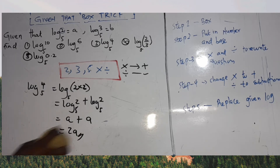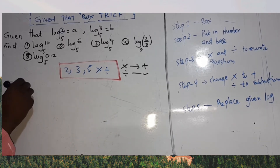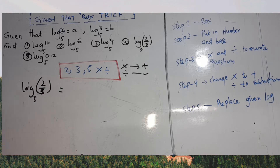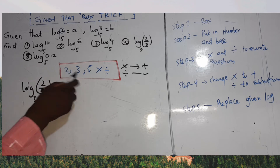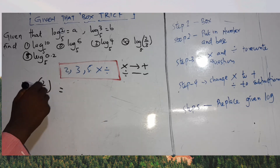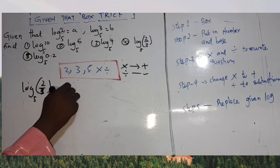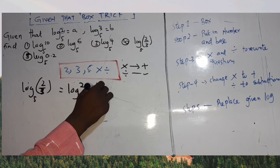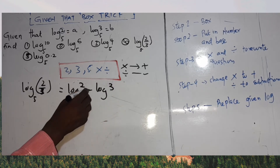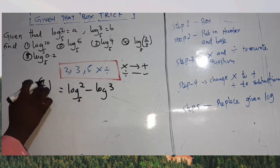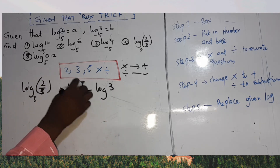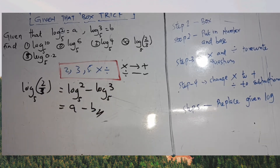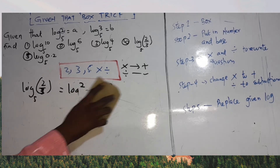Fourth question: log base 5 of (2/3). Here we have 2 divided by 3, and both 2 and 3 are already in the box, so we go directly to step 4: change division to subtraction. We get log base 5 of 2 minus log base 5 of 3. Step 5: log base 5 of 2 is a, and log base 5 of 3 is b. Final answer: a − b.